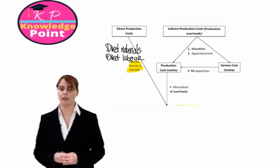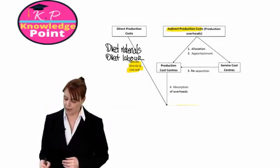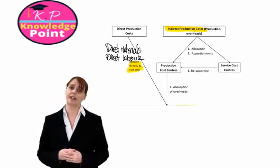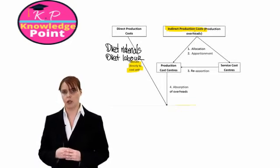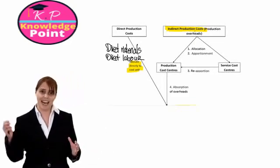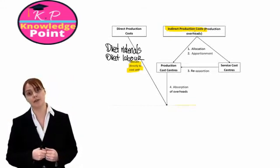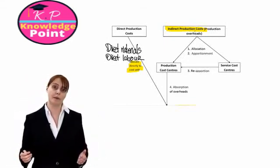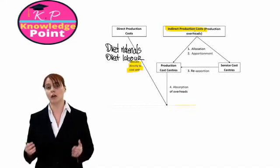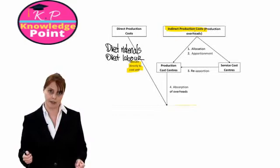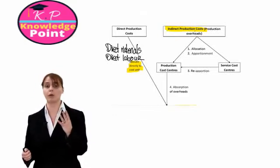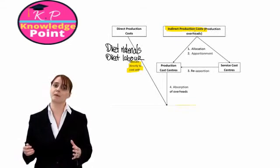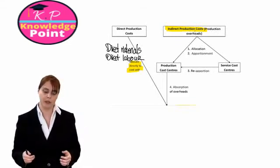The other component of our production cost per unit is the indirect production costs, or our production overheads. Now here's where things get a little bit more complicated. We've said that by definition, we cannot link these costs directly to each unit of output. So instead, we just follow a number of steps, which help us make a reasonable estimate of what our production overhead cost per unit is. There are four steps. We're going to go through each one in detail, and what the calculations are involved in each one. But just to give us a broad overview of what we're going to do, we can have a look.